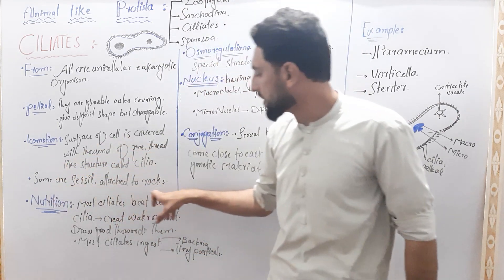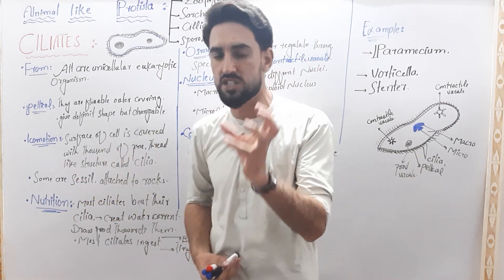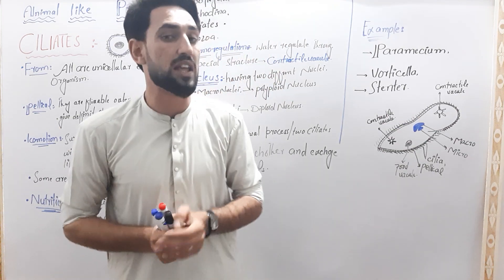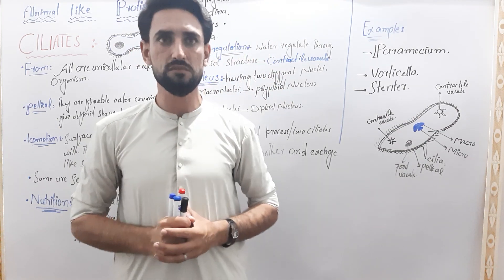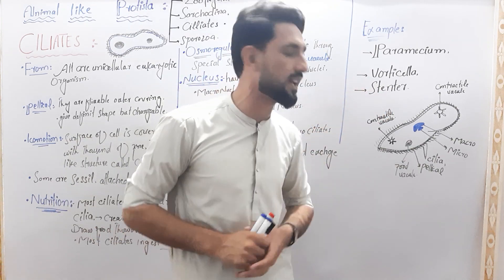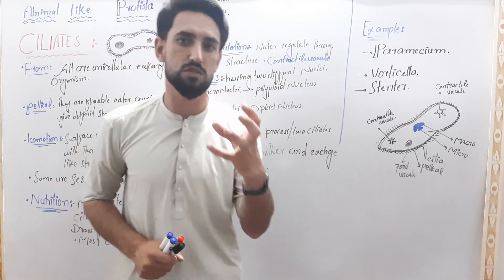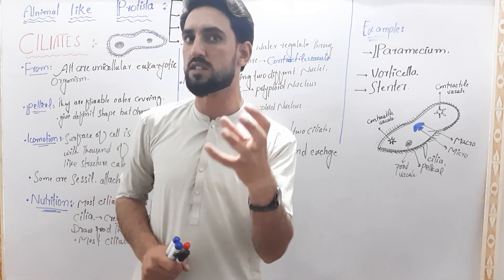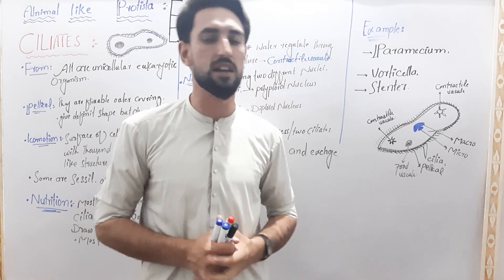Some ciliates are attached to rocks. This is the case of Stentor. The Stentor has cilia present. The Stentor is an example where cilia are present.